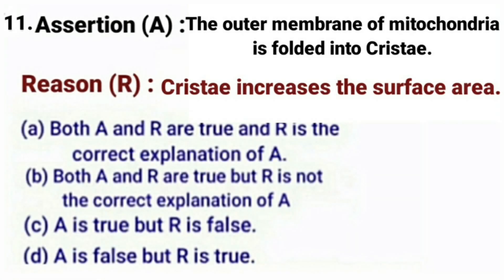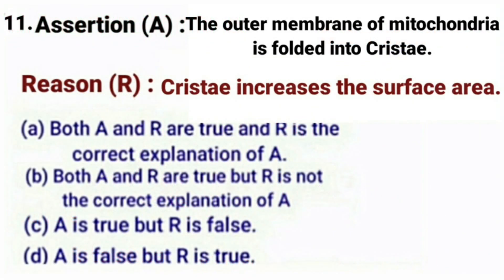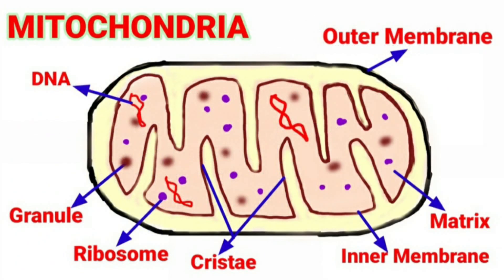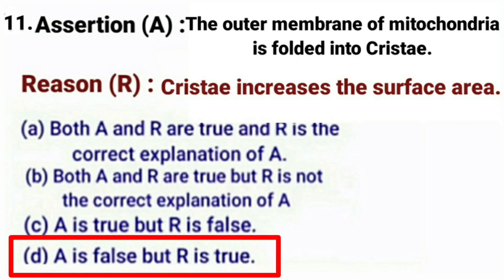Next question. Assertion: The outer membrane of mitochondria is folded into cristae. Reason: Cristae increases the surface area. Mitochondria have two membrane coverings — the outer membrane is very porous, while the inner membrane is deeply folded inwards forming cristae. So the statement of assertion is wrong — it is the inner membrane, not the outer membrane, that is folded into cristae. Cristae do increase the surface area, and the folding creates a large surface area for ATP-generating chemical reactions — so the reason is true. Assertion is false, reason is true. The correct answer is option D.